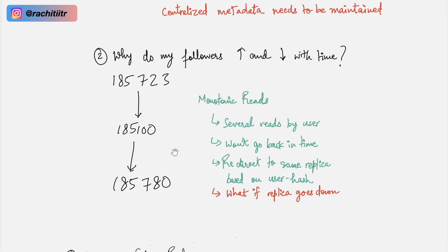This is a classic problem of monotonic reads, in which several reads are performed by the user and we must ensure that they won't go back in time. You should always redirect them to either the same replica or to some replica which is always moving forward with time. You don't want them to redirect to a replica which is stale from some replica which was given earlier to them.